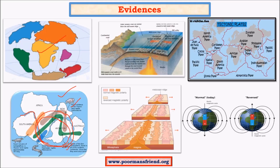In sea-floor spreading, the major proof is paleomagnetism — rocks with magnetic properties. Rocks equidistant from the fissure have aligned themselves due to the reversal of the magnetic field. Rocks near the fissure are younger, while rocks farther away are older. Oceans also have much younger rocks compared to continents. All these are key evidences of sea-floor spreading.